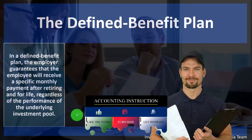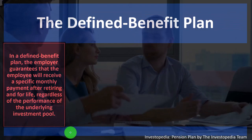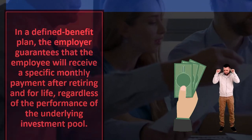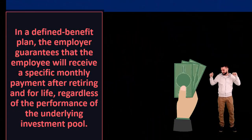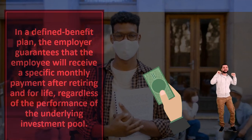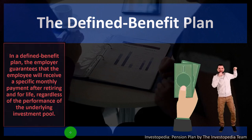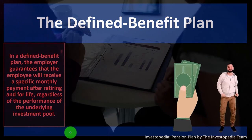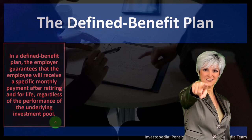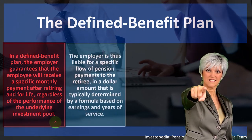There are two main types of pension plans: the defined benefit plan and the defined contribution plan. These are accounted for differently and can have varying levels of complexity. In a defined benefit plan, the employer guarantees the employee a specific monthly payment after retiring for life, regardless of the performance of the underlying investment pool.